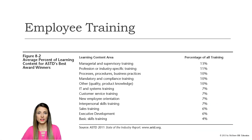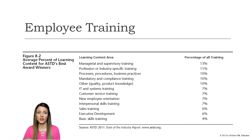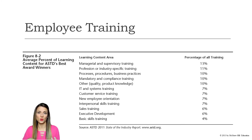There are a variety of different training programs that organizations might use to improve employee performance. Manager and supervisor training is the most popular. Profession-, industry-, and job-specific training comes in at number two. The third type relates to the organization's processes, procedures, policies, and business practices — specific to that organization.